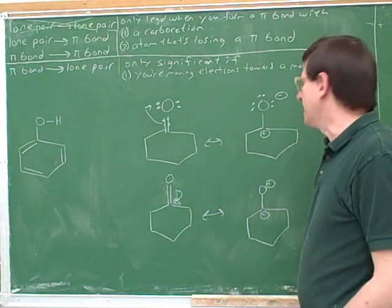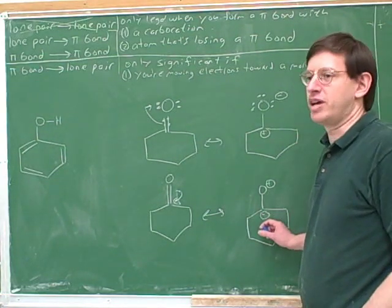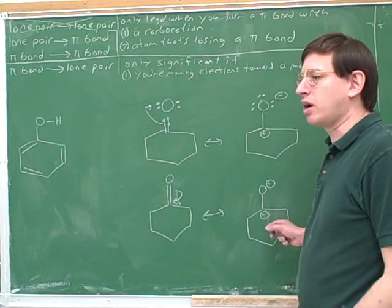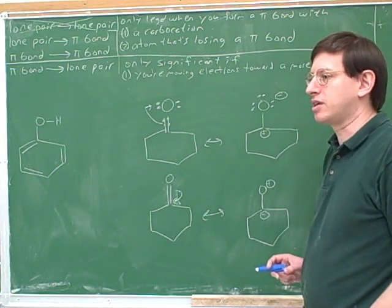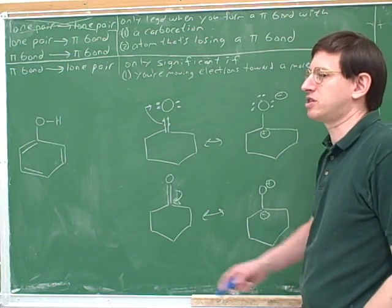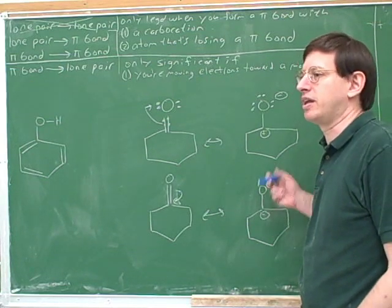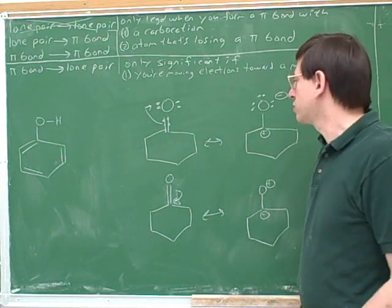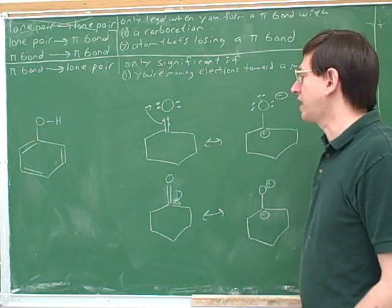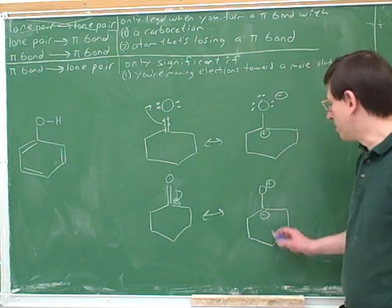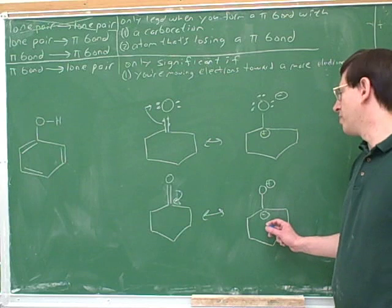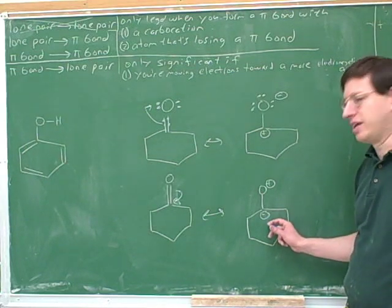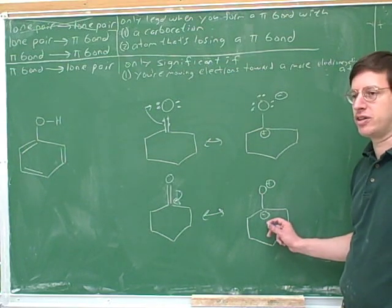It is a resonant structure and does make some contribution to the characteristics of the molecule, but it's such a small contribution that it's not worth considering. So let's put these into the categories I've talked about before: would we call this the most significant, the less significant, or the insignificant structure?